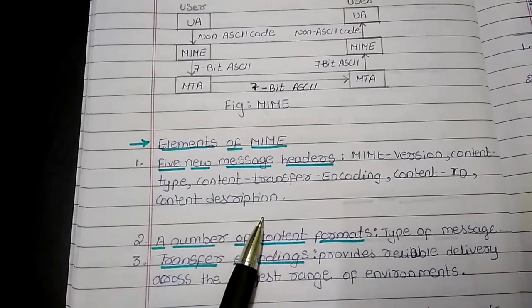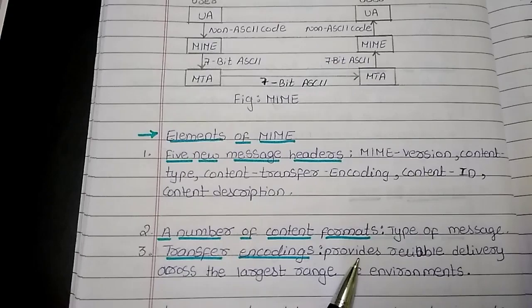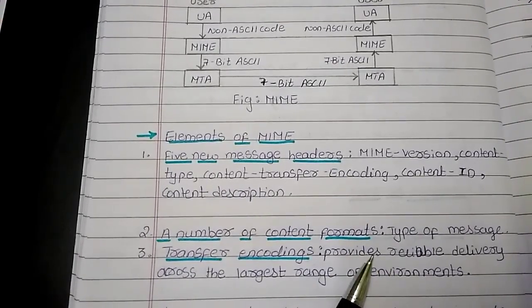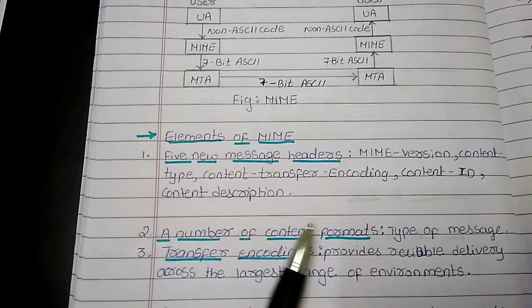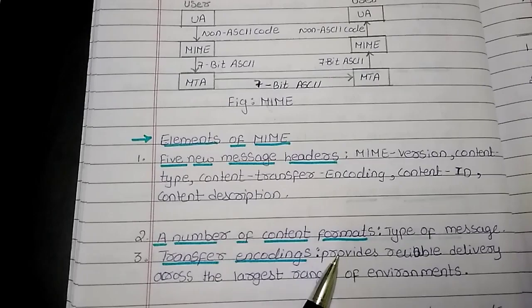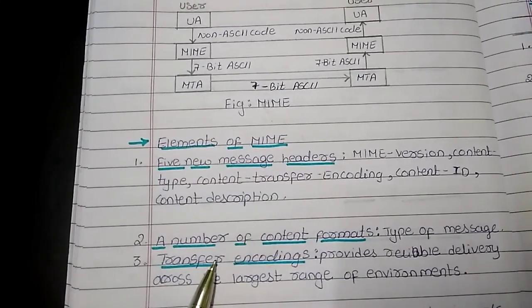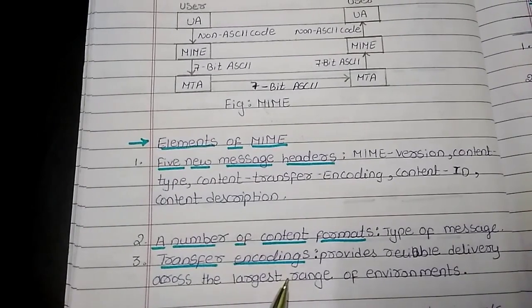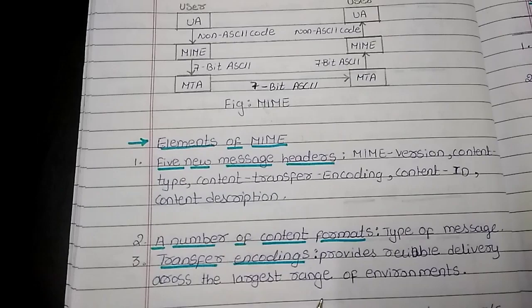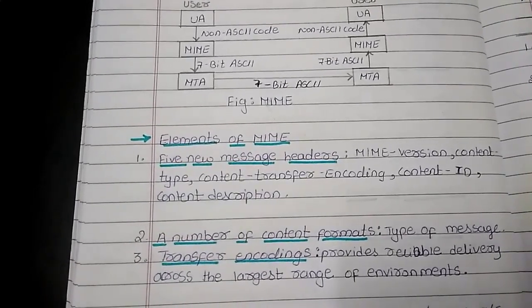The next element is a number of content formats. This specifies what type of message we are sending, like whether it is a textual file, audio file, video file, or some other format. Then comes transfer encodings, which provide reliable delivery across the largest range of environments. This is about MIME.